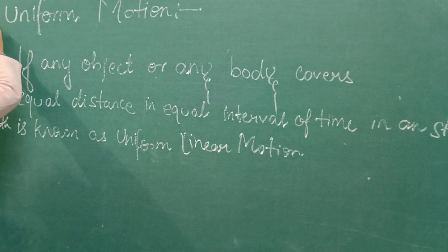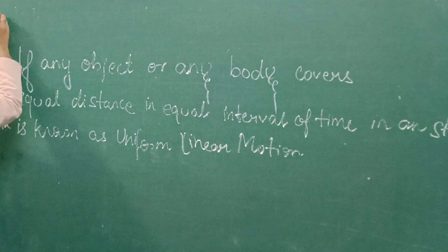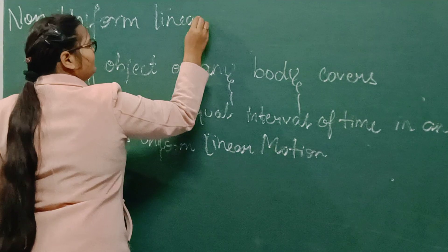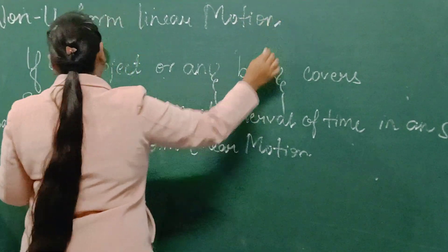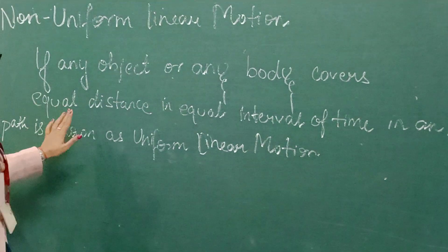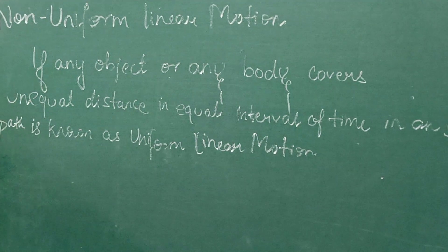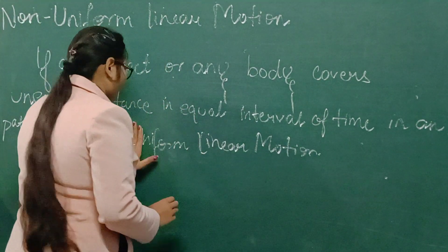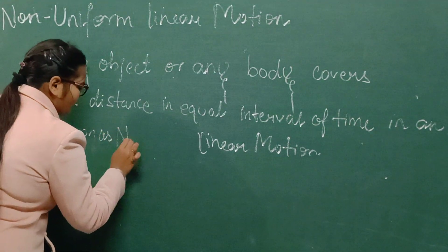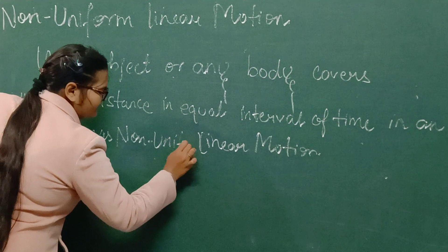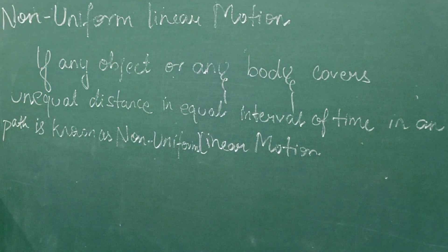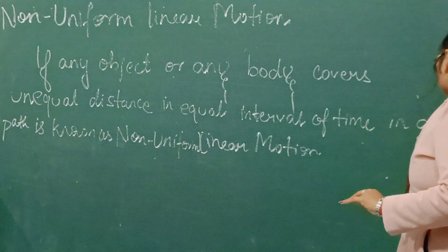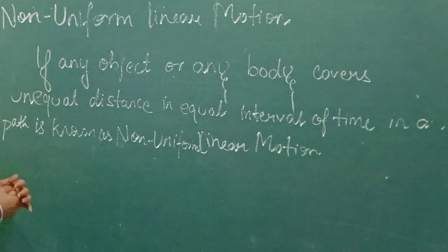Next, non-uniform linear motion. The definition is similar but with one change: if any object or body covers unequal distance in equal interval of time in a straight path, that is known as non-uniform linear motion.